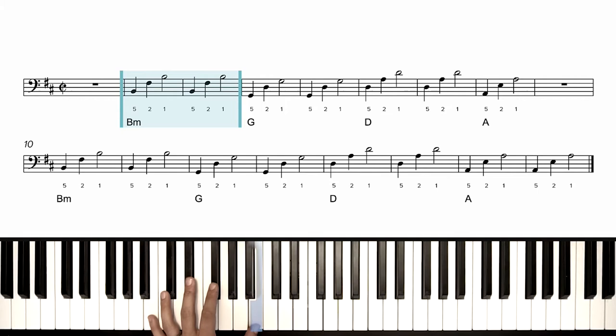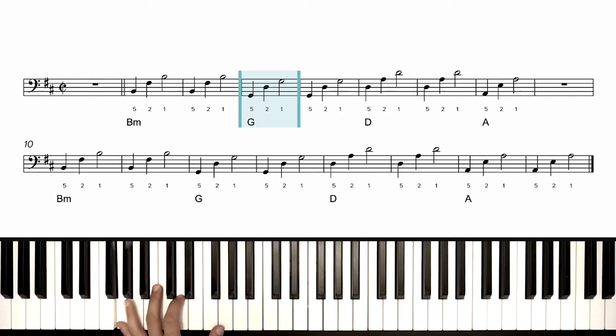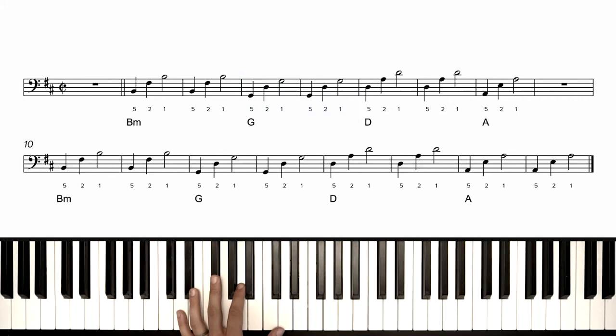We're going to do that same pattern through each one of these chords. So for the G chord, we're going to drop down G, D, G. Okay, for the D chord, same thing. And the A chord, same thing. See how easy that is?